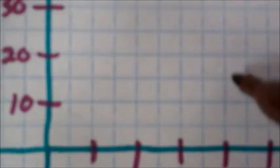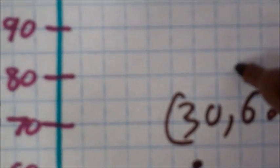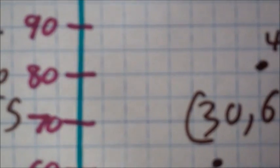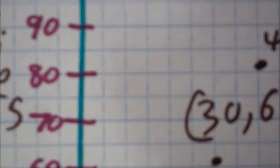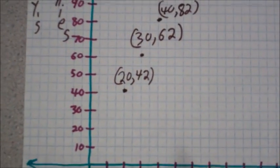Our final ordered pair for this is (40, 82). So we're going to go over 40, and then up, 82. So this is (40, 82). We graphed our three points, and we labeled them.